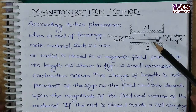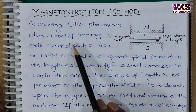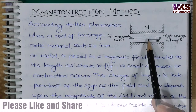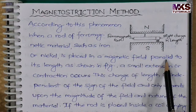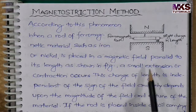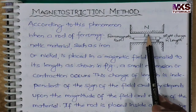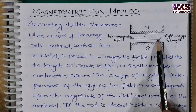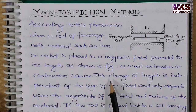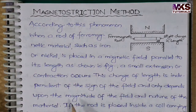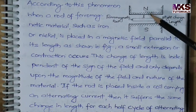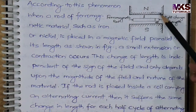According to this phenomenon, when a rod of ferromagnetic material, such as iron or nickel, is placed in a magnetic field parallel to its length — meaning the magnetic field is parallel to the rod — a small extension or contraction occurs. This change in length is independent of the sign of the field and depends only on the magnitude of the magnetic field.